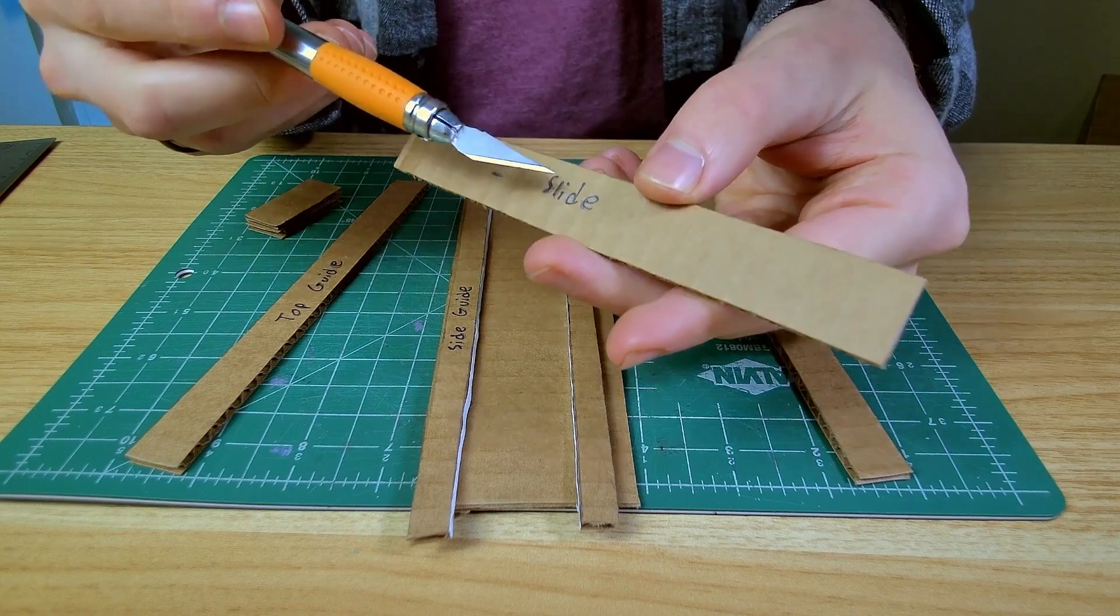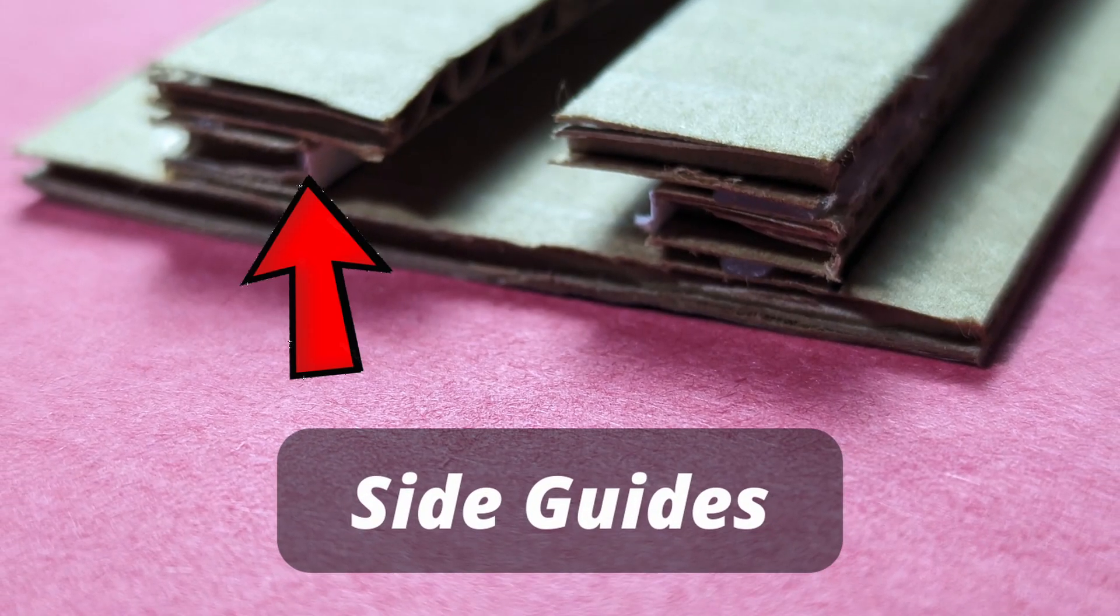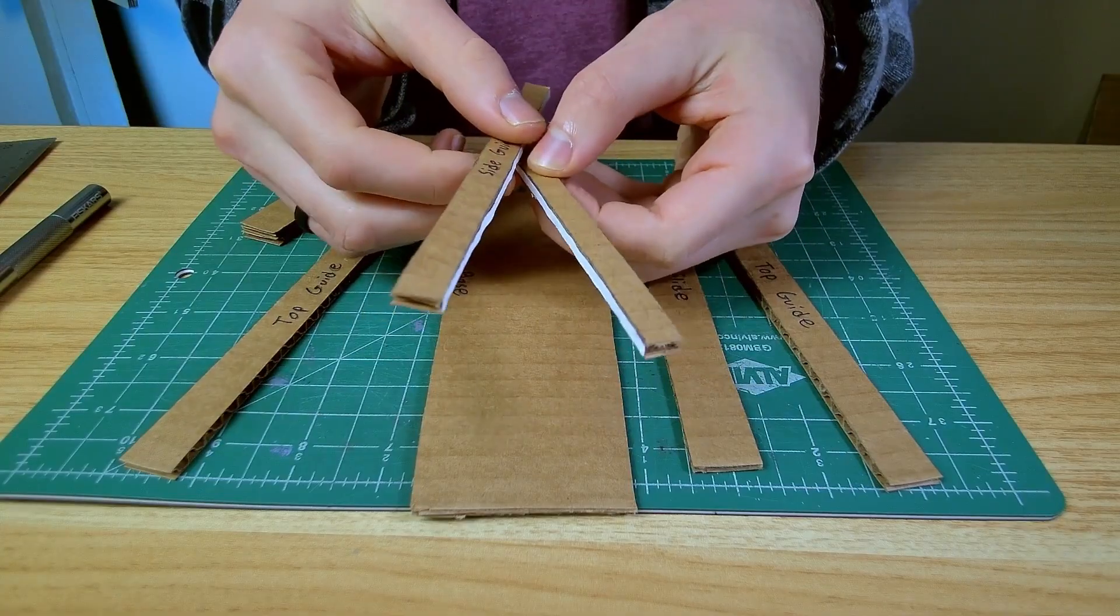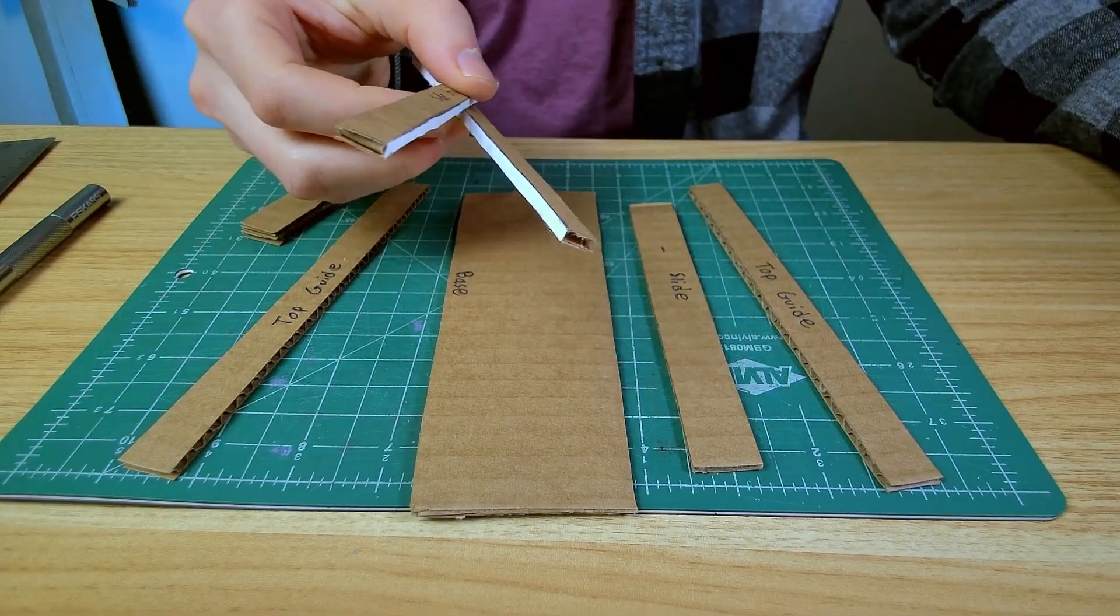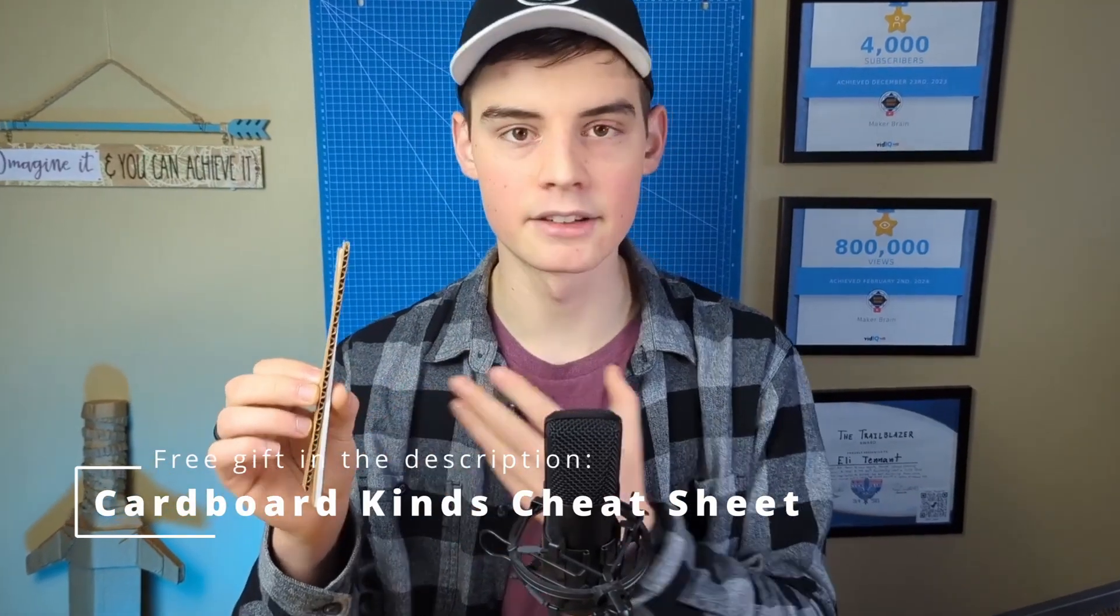Once you figure out how big you want the slide to be, you need to move on to making these side guides. I've already done a little bit of work on these and cut them out so that we can speed up the video. Basically these need to be made out of this same piece of cardboard, the same thickness kind of cardboard as your slider is made out of.